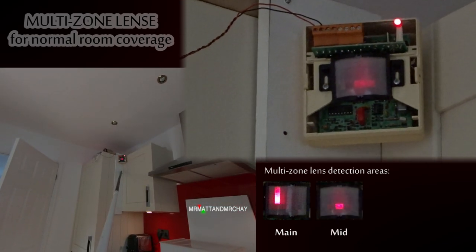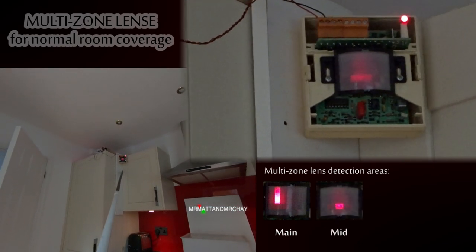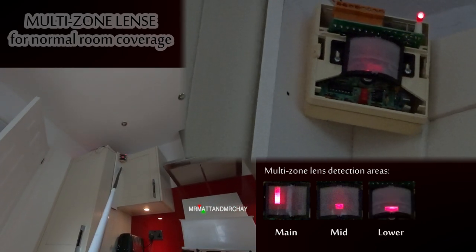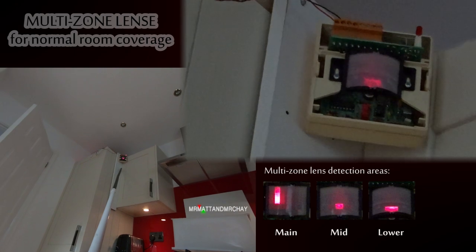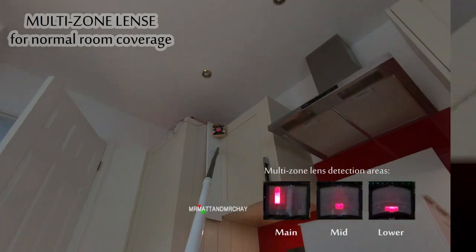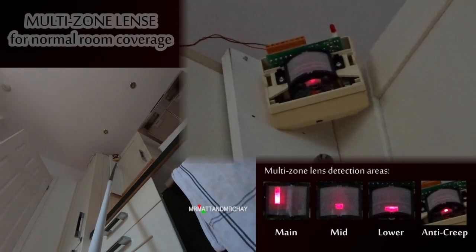This midsection detects motion further down, nearer to the unit. The lower section aims down for even closer detection, but not underneath. And some detectors have what's known as an anti-creep zone that detects motion directly underneath.